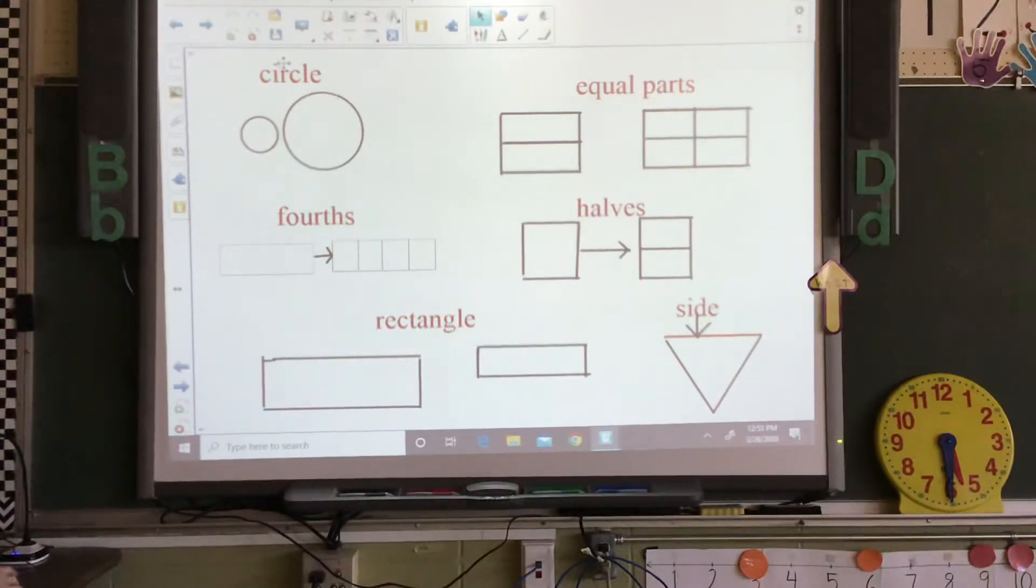So the first one is a circle and the definition of it is a closed round shape. Circles do not have sides and they do not have vertices.